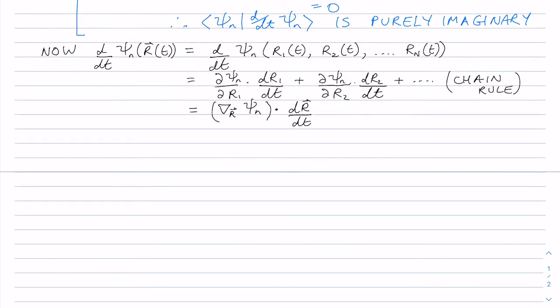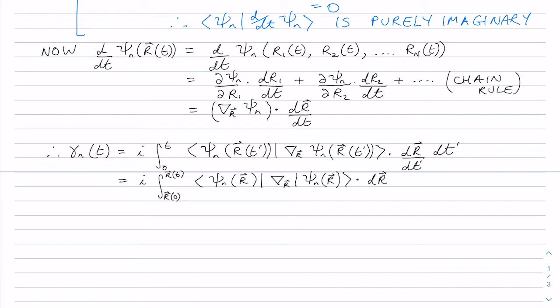And so we can rewrite Berry's phase. So we end up with an integral in configuration space from some point r at 0 to some other point r at t. But we need to be careful here about the limits of the integral because it's not just the limits that are important,